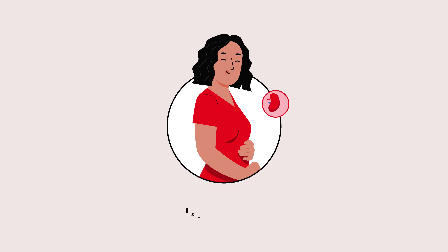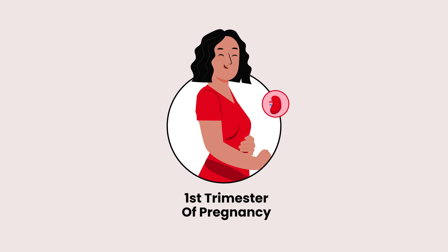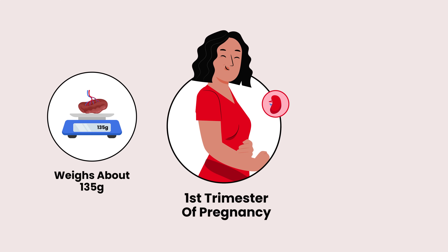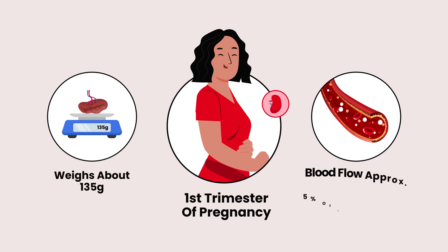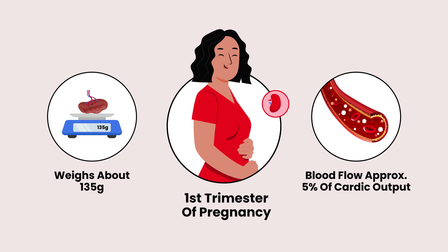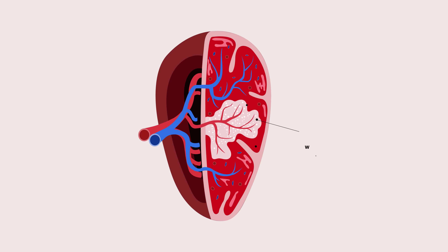The embryonic spleen appears in the first trimester of pregnancy, eventually weighing about 135 grams in an adult, with a blood flow that is approximately 5% of the cardiac output. It broadly consists of white pulp, a marginal zone, and red pulp.